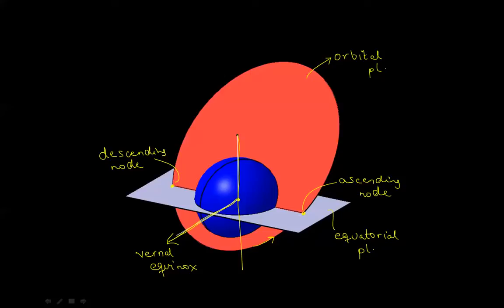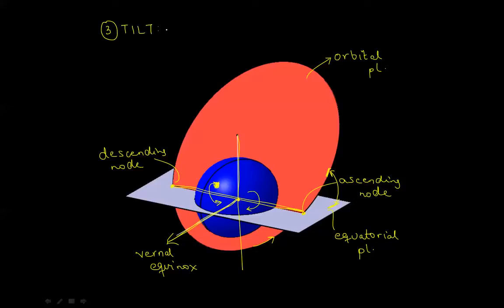If I hold the Earth, the equatorial plane, the north-south pole axis, and the line joining the two nodes steady, I can change the tilt of the orbit around that line — tilting it this way or the other way. This determines the angle between the orbital plane and the equatorial plane, and that is our third parameter. It is known as inclination, denoted by the letter I, measured in degrees from the equatorial plane to the orbital plane.